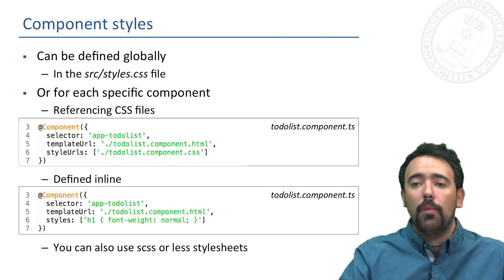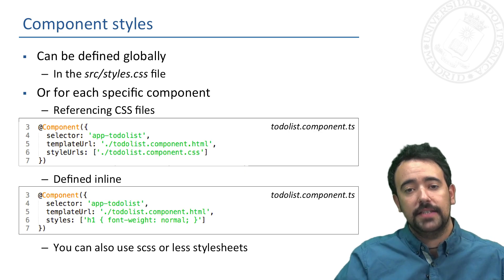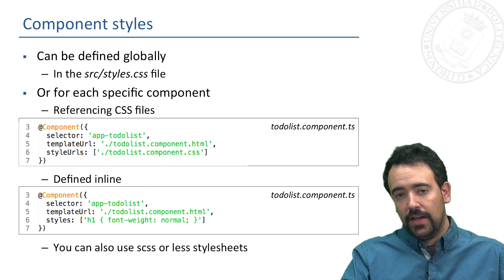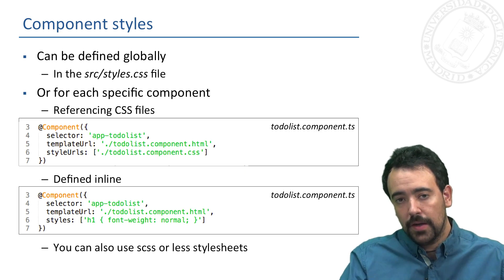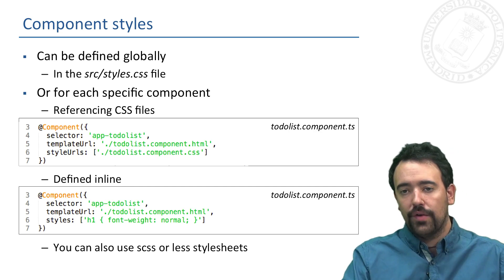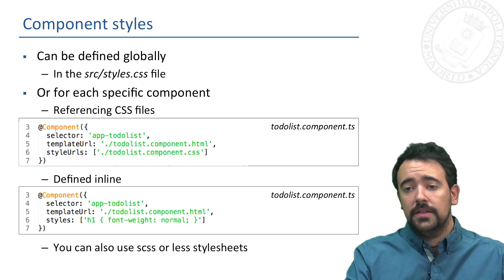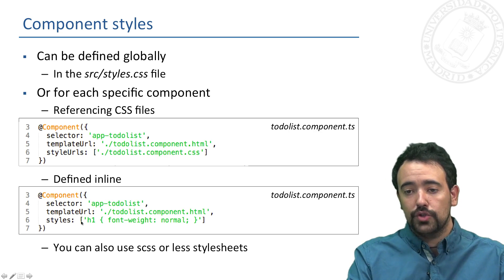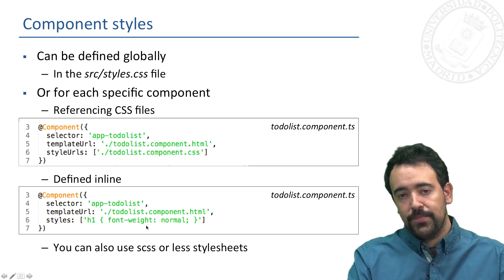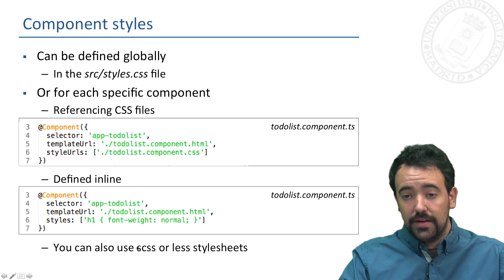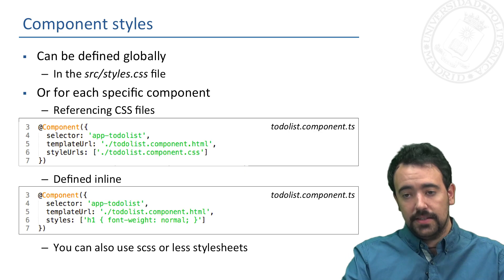If we go to the component styles, this is just a file in which we define using CSS language the style we want to apply to our view. We can include in the component metadata the link to the CSS file, but we can also directly include the defined styles inline. Of course we can also use SCSS and LESS styles.